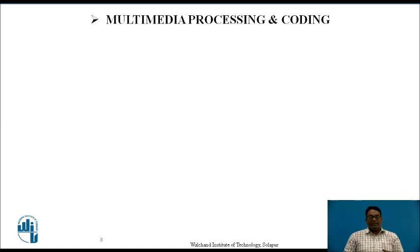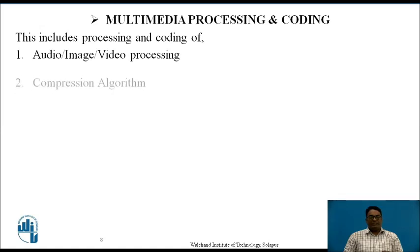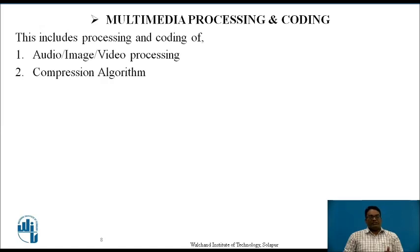So how is a multimedia file processed and coded? This includes two to three different steps. First, the audio, image, or video is processed, then a particular algorithm is used for processing the contents. Nextly, the multimedia content is analyzed.